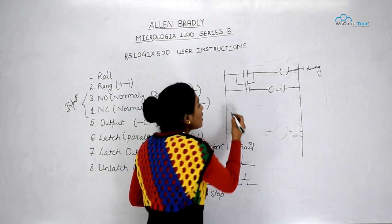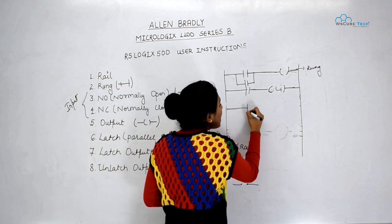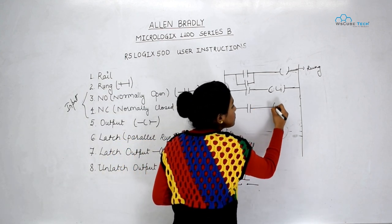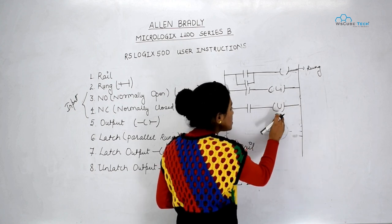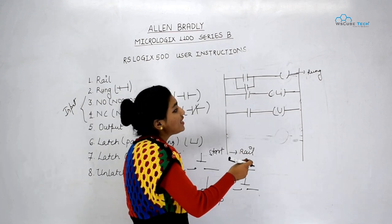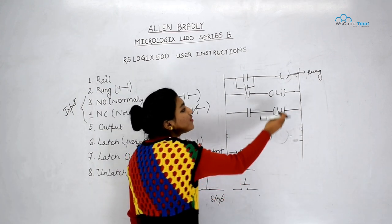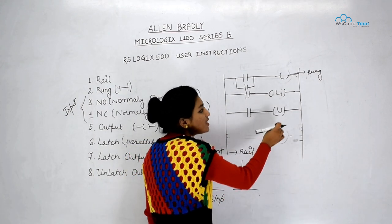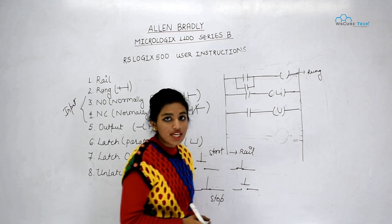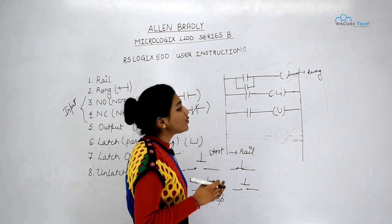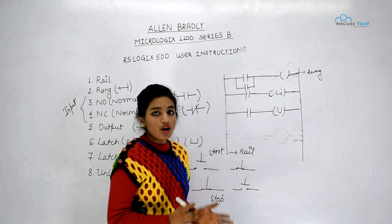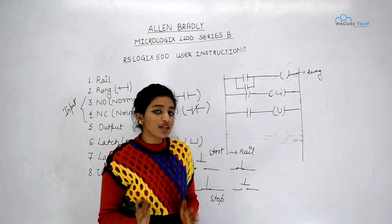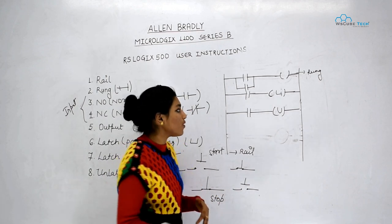To turn the output off, we have to unlatch it. For that we use the unlatch instruction, and the addressing of latch and unlatch output will be the same, since we want the same output to turn on as well as turn off.